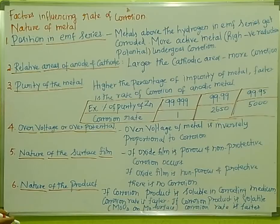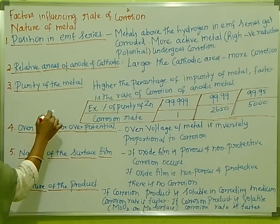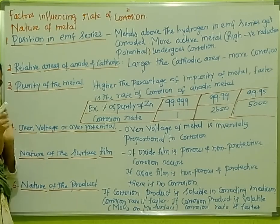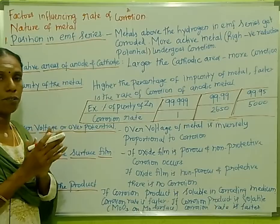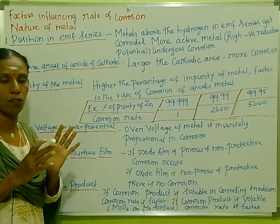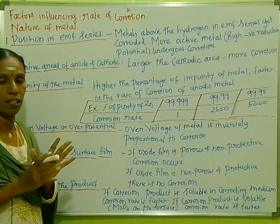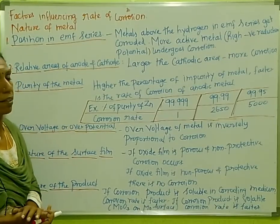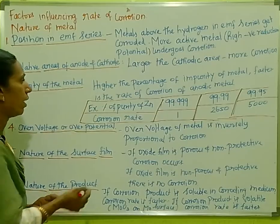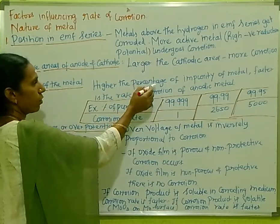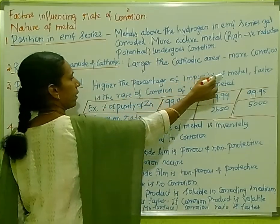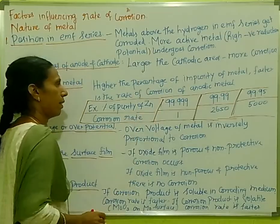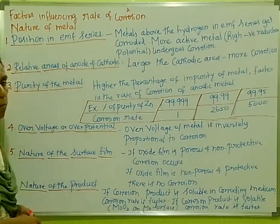Another factor is the purity of the metal. If the metal is not pure — that is, if it contains impurities — corrosion occurs more readily. Higher the percentage of impurity in the metal, faster the rate of corrosion of the anodic metal.